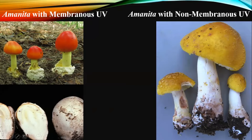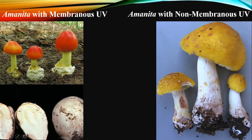As the mushroom sucks up water and expands, it pokes through the top of that universal veil, leaving what we see at the bottom called a saccate volva - the remnants of the membranous universal veil. On the right side of the screen, there is no saccate volva at the base. That's because this universal veil is non-membranous - it completely encompasses the amanita but fragments as the cap expands, and the little fragments form what we call velar warts.